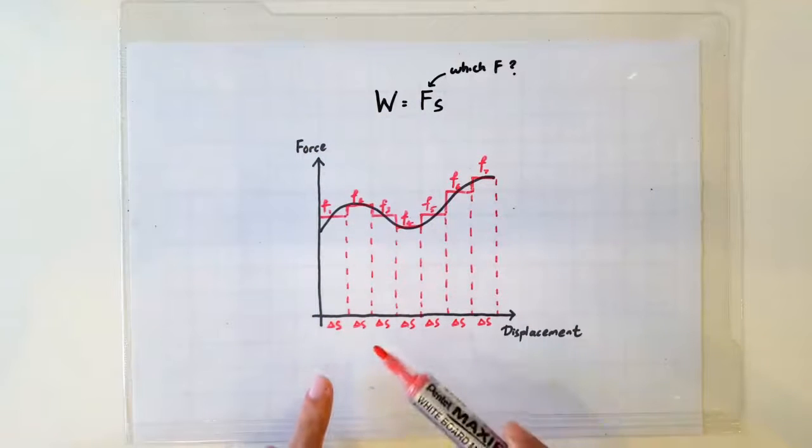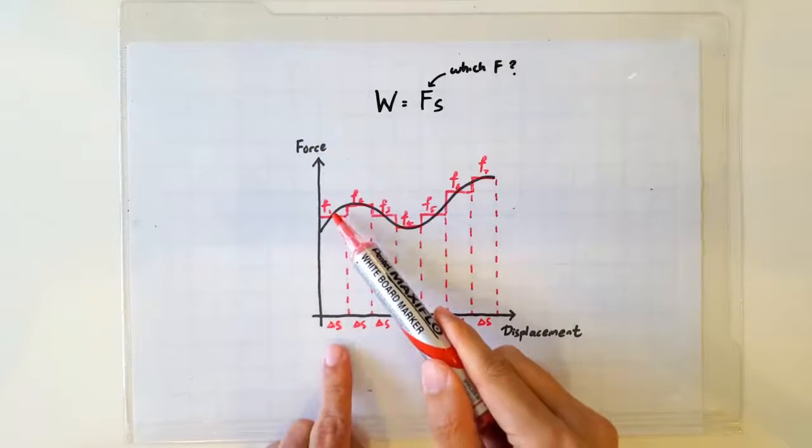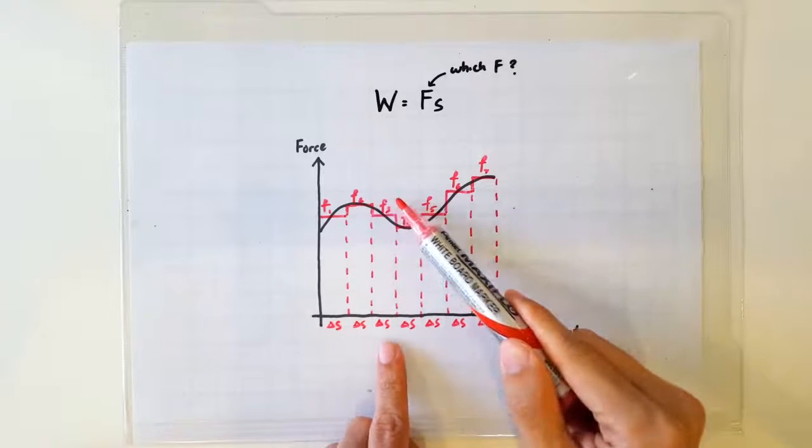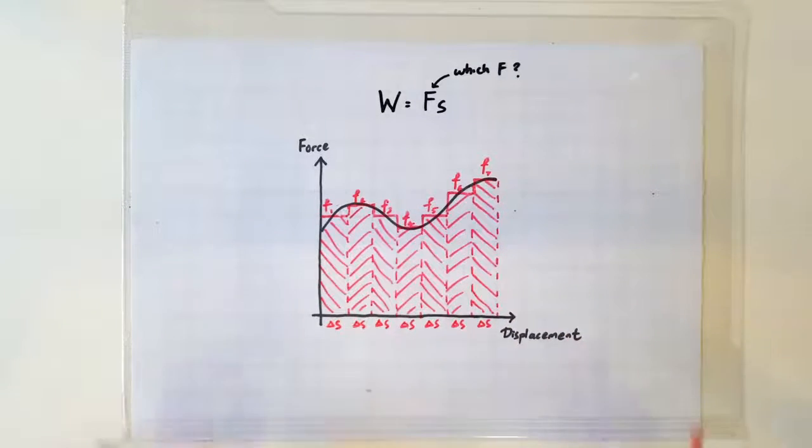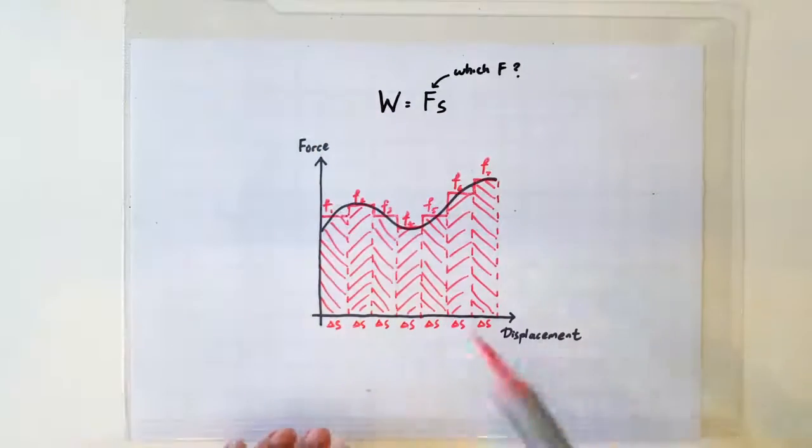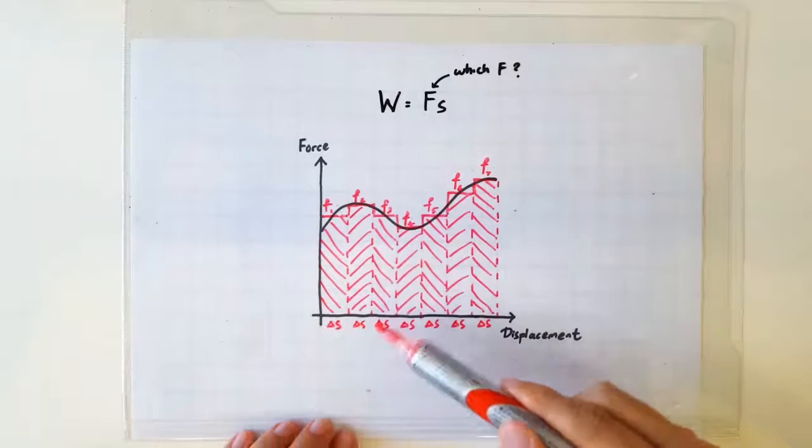by summing up F1 times delta S plus F2 times delta S plus F3 times delta S and so on. So basically we are estimating the total work done by summing up the areas of all these rectangles.